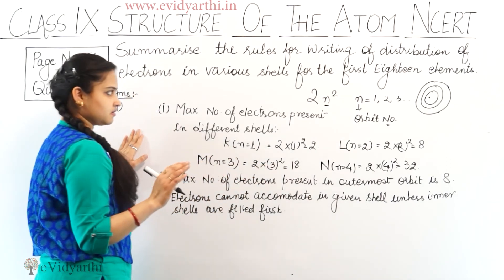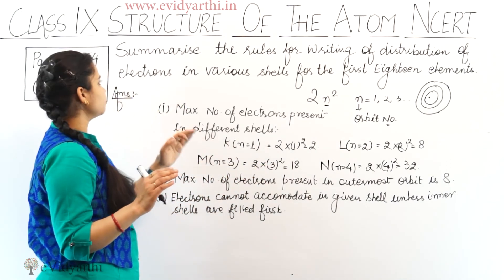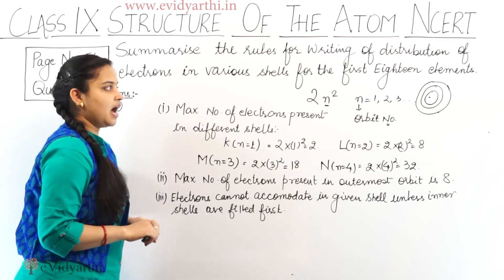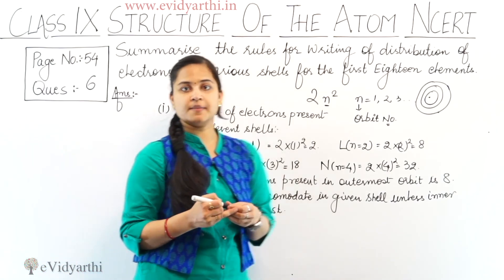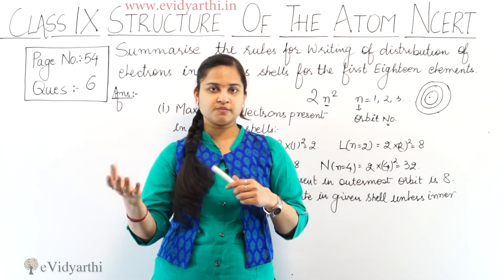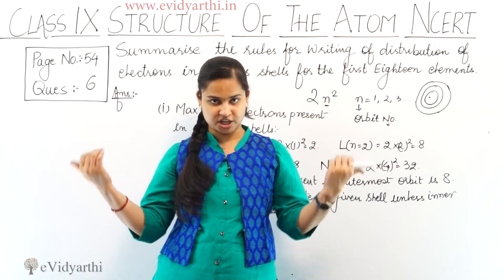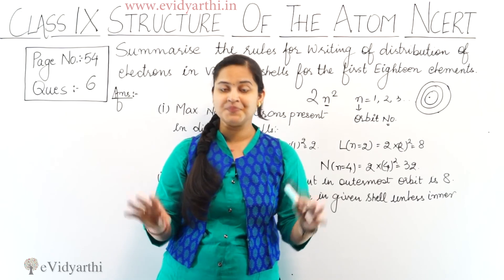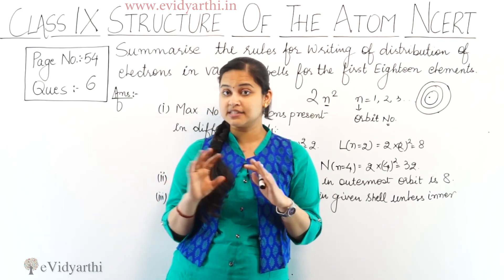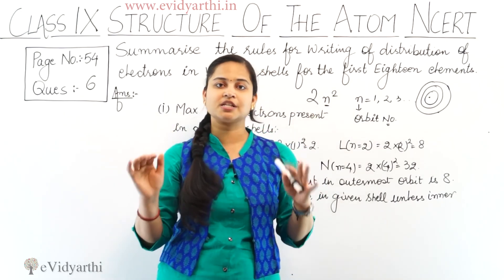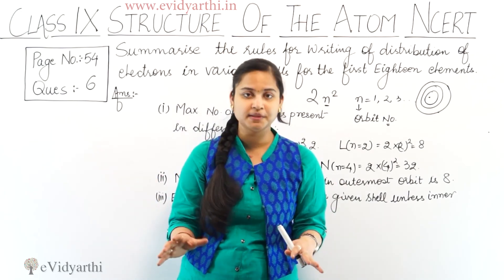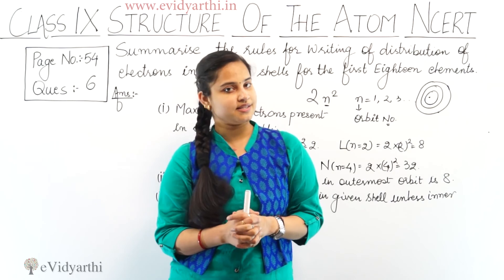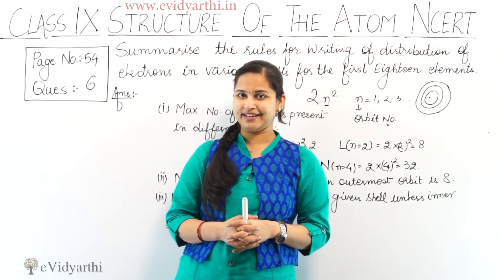These were the three rules for writing the distribution of electrons in various shells for the first 18 elements. I hope you understood. Further questions have applications of these rules, so it will become even clearer. If you have any doubt at any point, please mention your doubts in the comment box below — I will definitely answer. So it's time to say goodbye now.